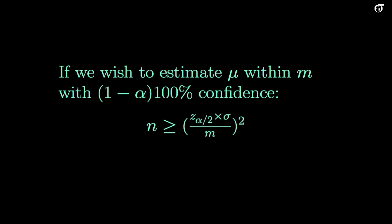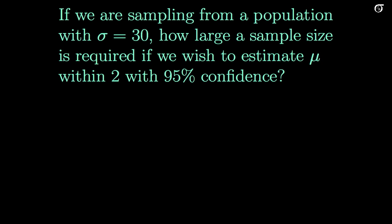Let's take a look at an example. If we are sampling from a population with sigma equaling 30, how large of a sample size is required if we wish to estimate the population mean mu within 2 with 95% confidence?